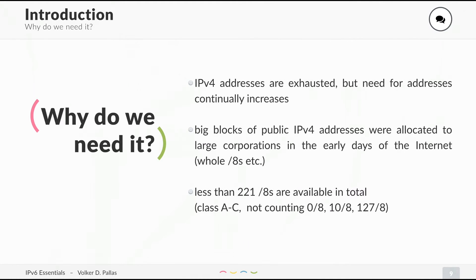IPv4 addresses are exhausted, but we need more addresses. In the beginning of the internet, big blocks of public IPv4 space were allocated to large corporations like Microsoft or Google. They received whole slash /8 blocks, which is just too many. And we only have 221 slash /8 blocks available, and we cannot even use each one of them.